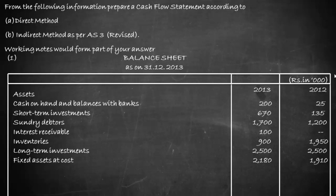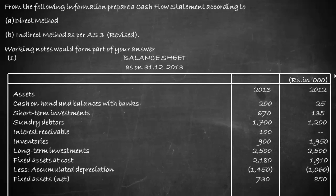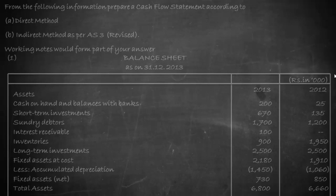Fixed assets at cost increased from 1910 in 2012 to 2180 in 2013. Accumulated depreciation moved from 1060 to 1450, giving a net value that came down from 850 to 730. Total assets in 2012 were 3660 whereas in 2013 they are 6800.